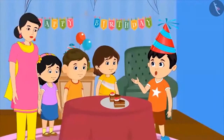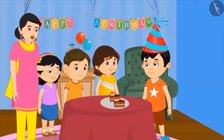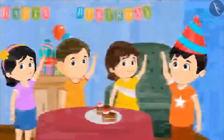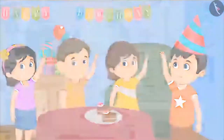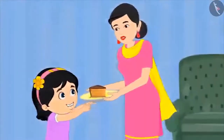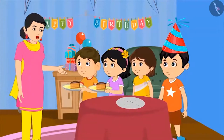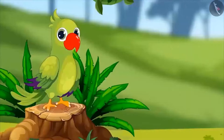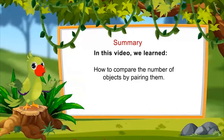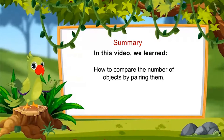But what about the remaining pieces of cake? Does any child want one more piece? All the children raise their hands — everyone needs one more piece. This is for Aarti, and this is for Sonu. Oh, the pieces of cake are over. Never mind — Aarti, you share your piece with Neha, and Sonu, you share your piece with Chotu. This way everyone will get the same quantity of cake. That was all for today. In this video, we learned how to compare the number of objects by pairing them. Bye, friends!